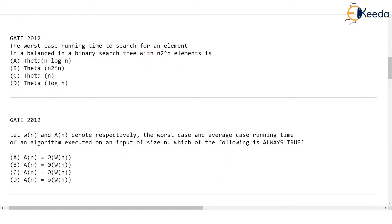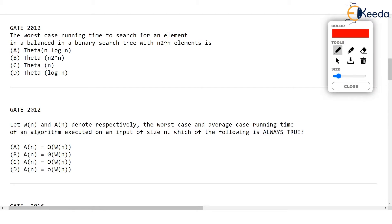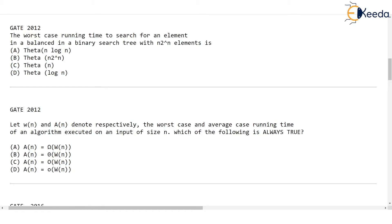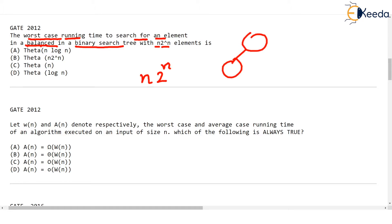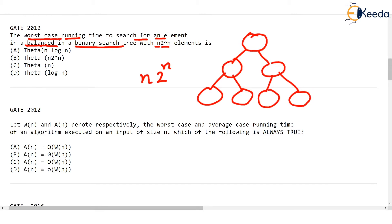Now let's see the GATE 2012 question — very interesting. They ask: what is the worst case running time to search for an element in a balanced binary tree with n·2^n elements? The number of elements is n multiplied by 2 raised to n. The key information is that the tree is balanced.